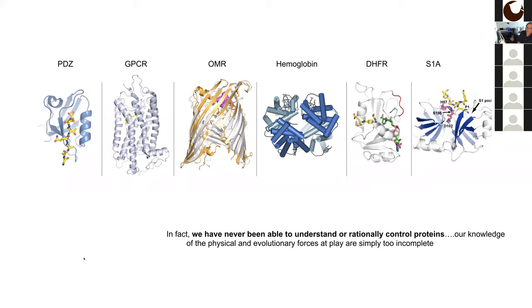Feynman gets some details wrong — hemoglobin doesn't have that many amino acids — but he really gets the essence of the problem: finally we have, to great precision, the position of all the atoms in the structure, but we don't understand how it works. He declares that's the next problem, and that was 1961. I would say it's still the central problem of structural biology: to explain the function of proteins given their structure. Our knowledge of the physical and evolutionary forces at play in the origin and function of proteins is simply too incomplete.